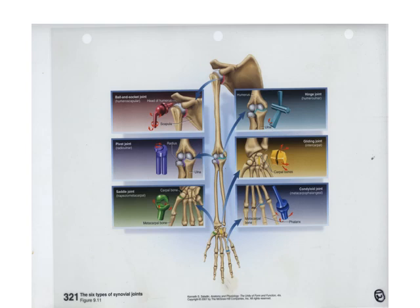Condyloid joints have an oval articular surface of one bone fitting into a complementary depression on the other. Both surfaces are oval and you can get flexion, extension, abduction, and adduction — like at your knuckles. The saddle joint is in the thumb and has more of a swivel movement, which is why you can twiddle your thumbs but can't do that with other fingers. Those are general categories based on the articulating surfaces.